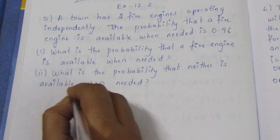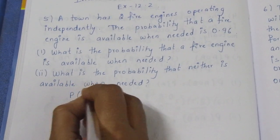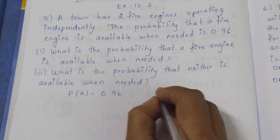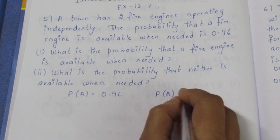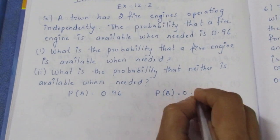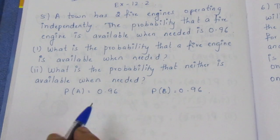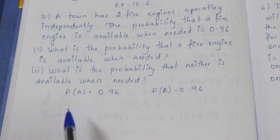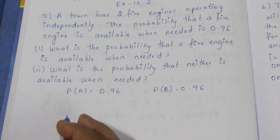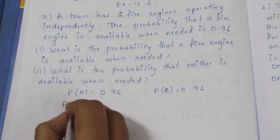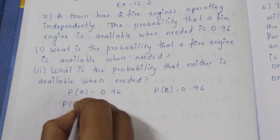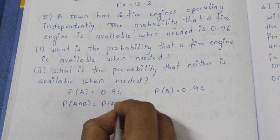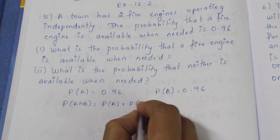So let's define: probability of A is 0.96 and probability of B is 0.96. Since they operate independently, we use the independent events formula: P(A ∩ B) = P(A) × P(B).